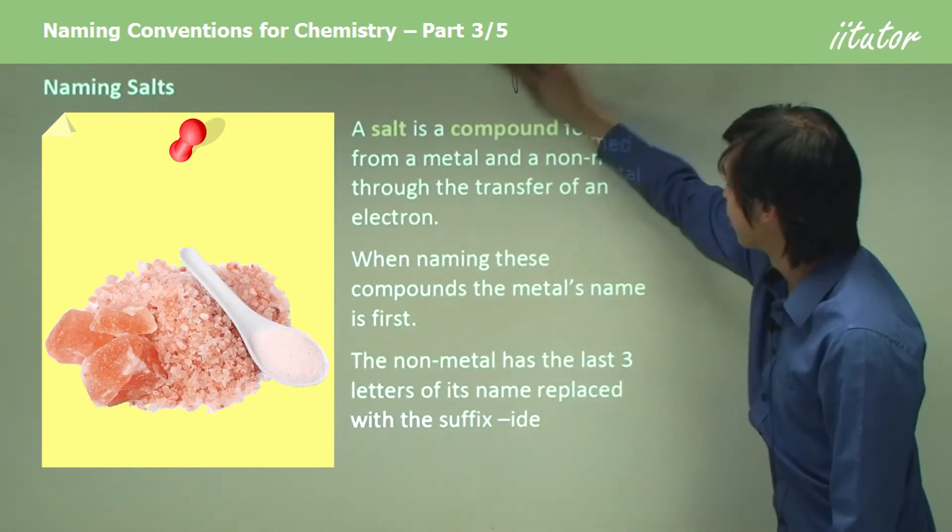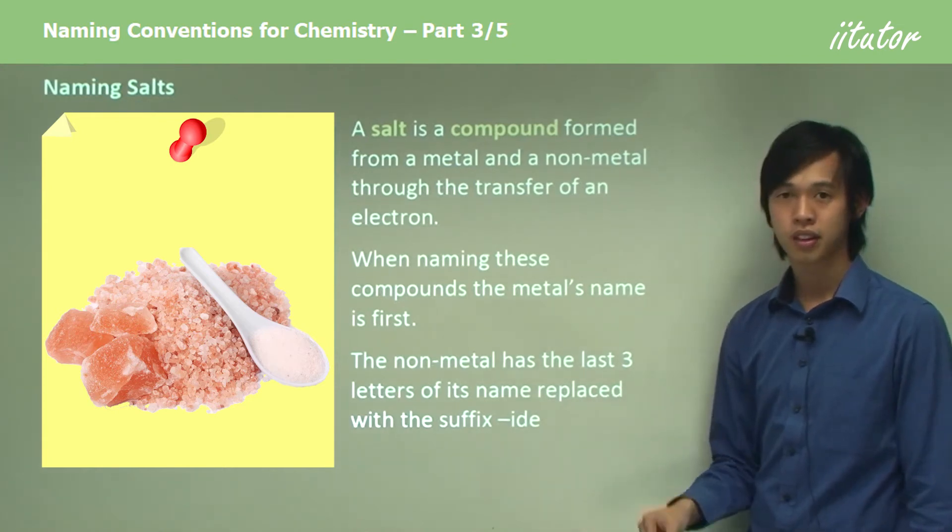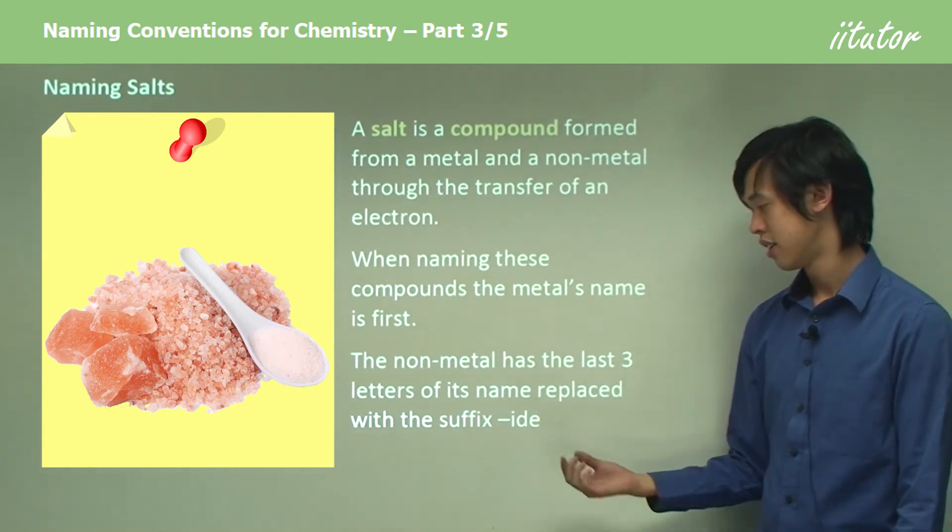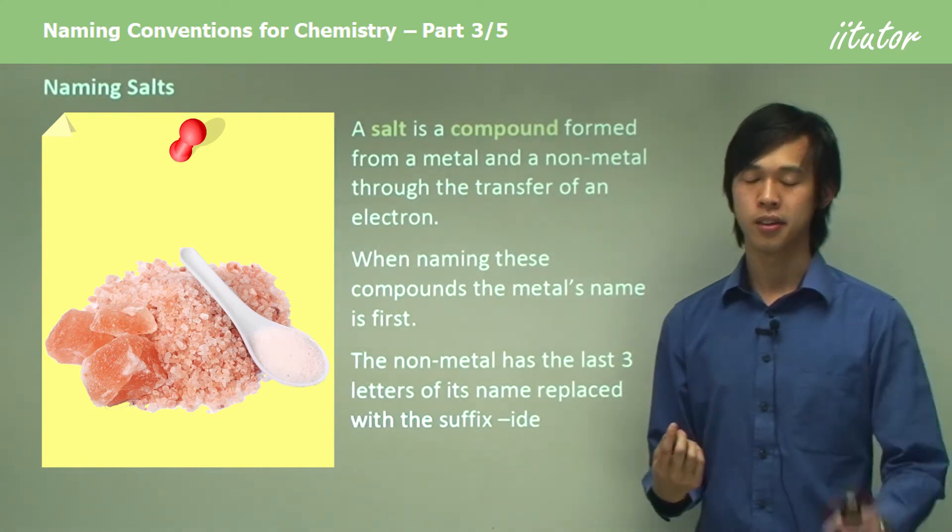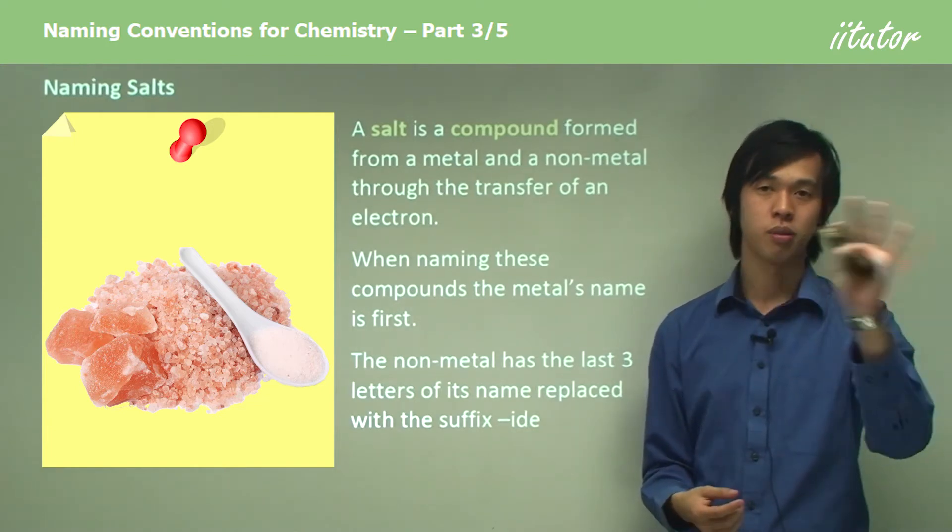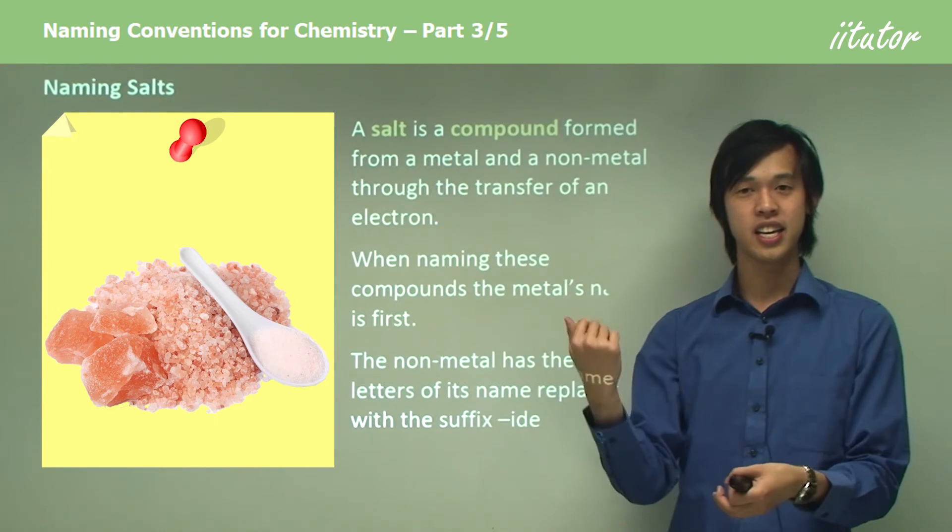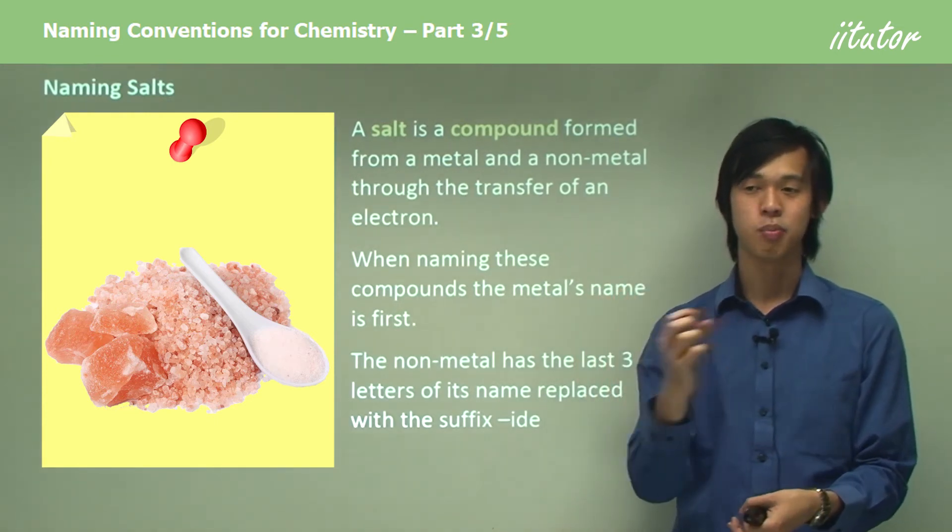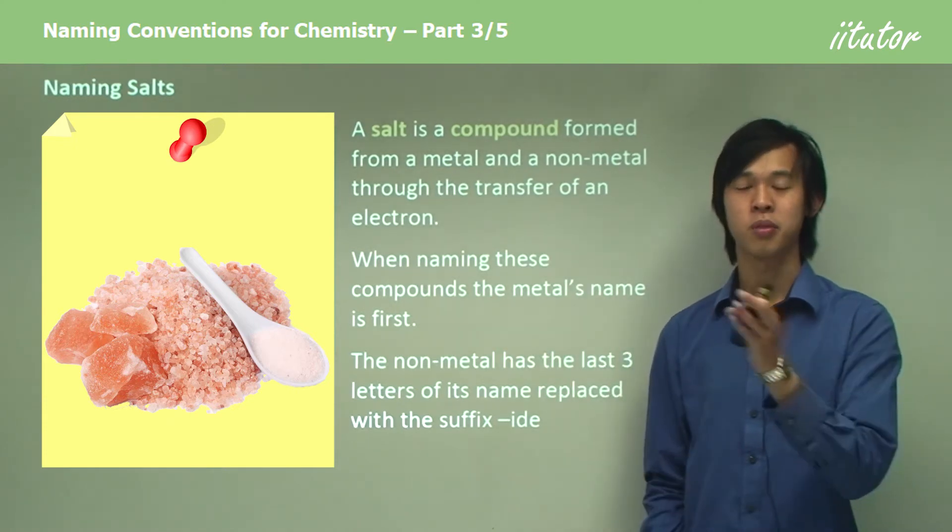So the non-metal, the reason why I said chloride was because the last three letters of its name, the non-metal that is, is replaced with the suffix "-ide". Okay, so the metal comes first, normal name, sodium. Now, we've got chlorine. So, we drop the last three letters, i-n-e, and then we add "-ide", so it becomes chlor-ide. So, chloride, so it becomes sodium chloride.